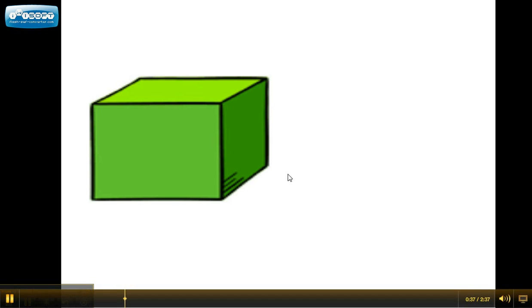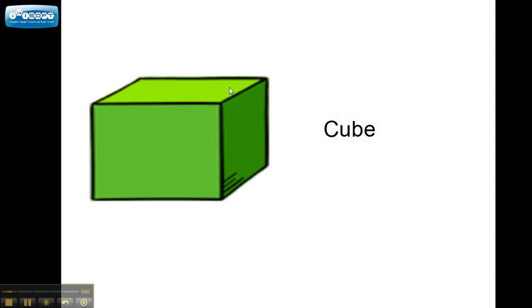The next one is familiar too. It looks like a box. It's called a cube. It looks like an ice cube.